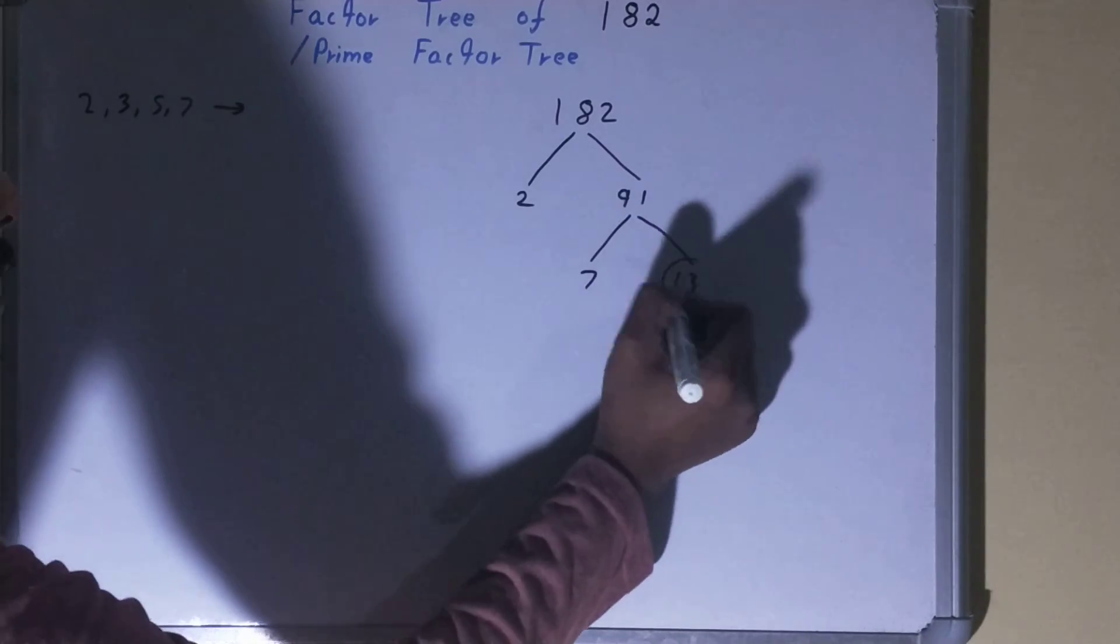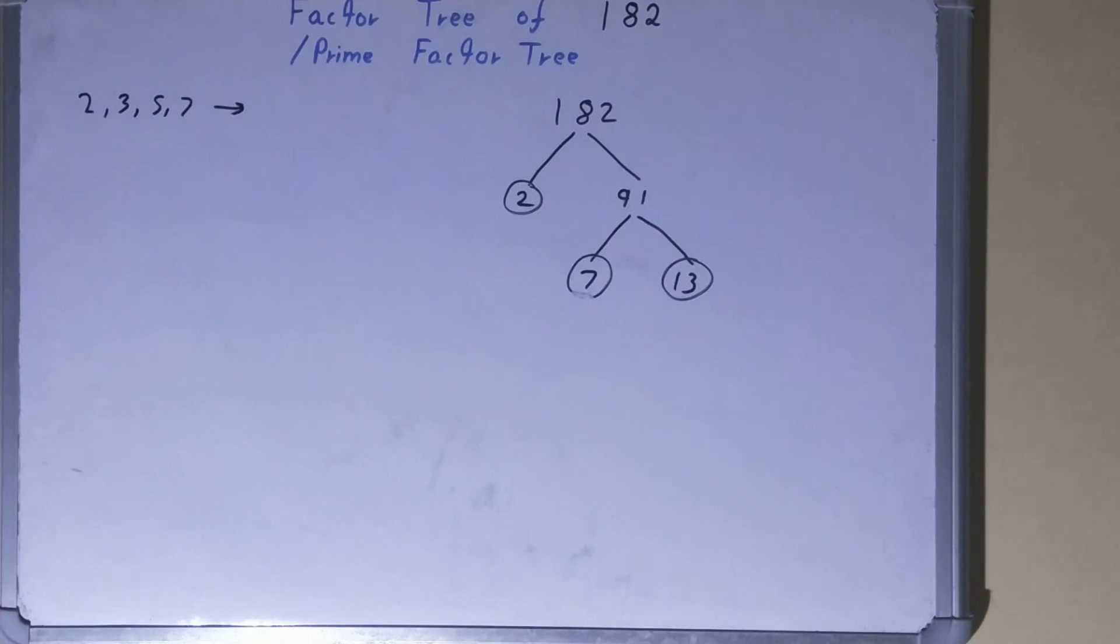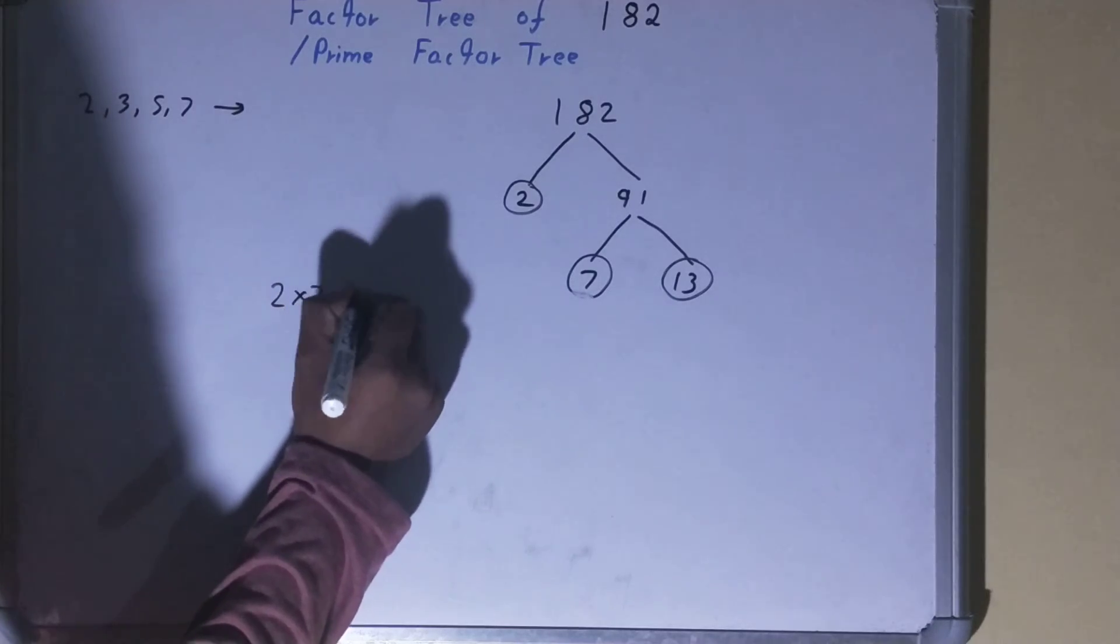The only thing you need to do is circle the ending nodes or the terminating nodes like this, and that will be the required factor tree. If you want, you can write it separately in the form of prime factors.